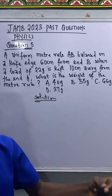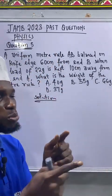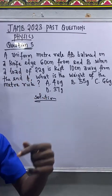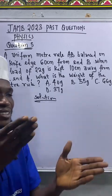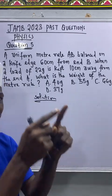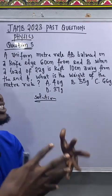When they say uniform it means the center of gravity is at the midpoint. Anytime you hear uniform beam, uniform bar, uniform metal rule, it means the center of gravity is at the midpoint and the weight of the object will be concentrated at the mid point.